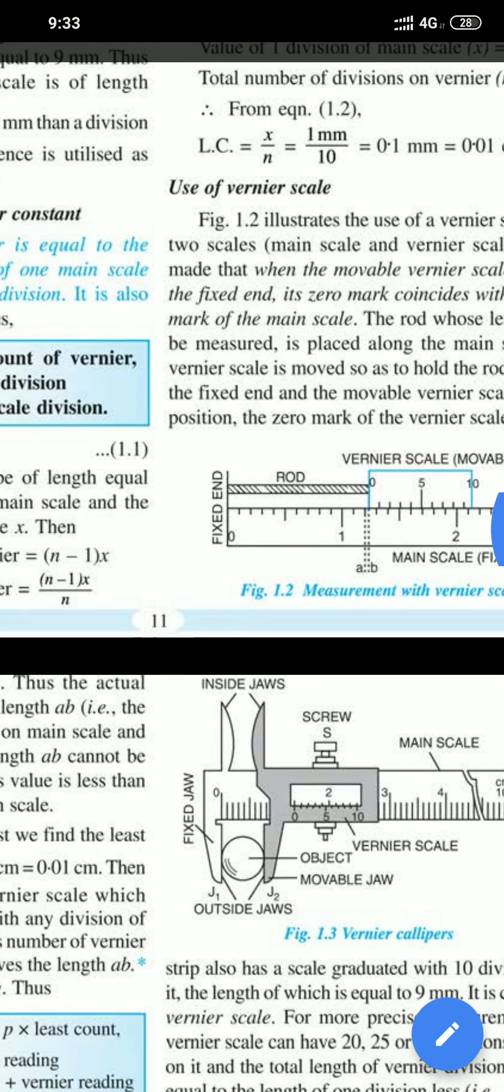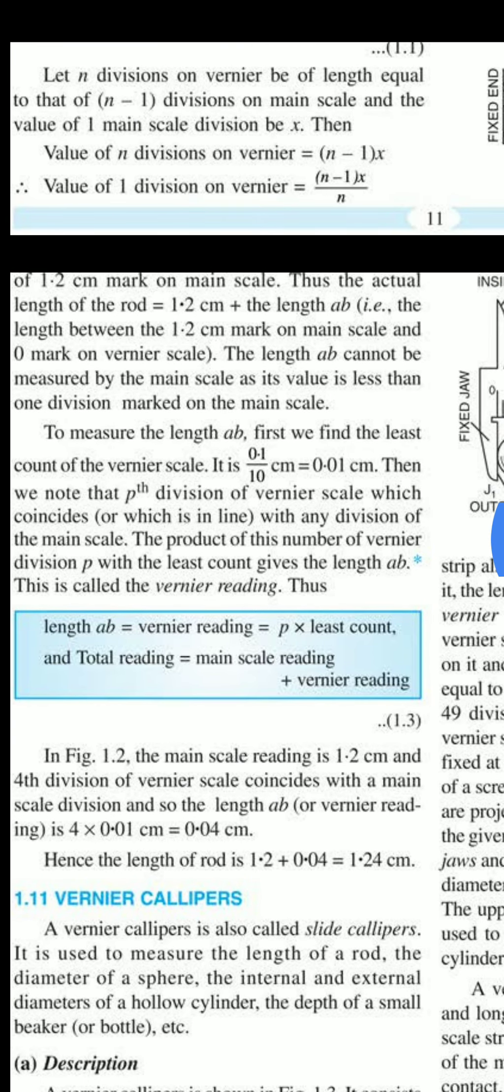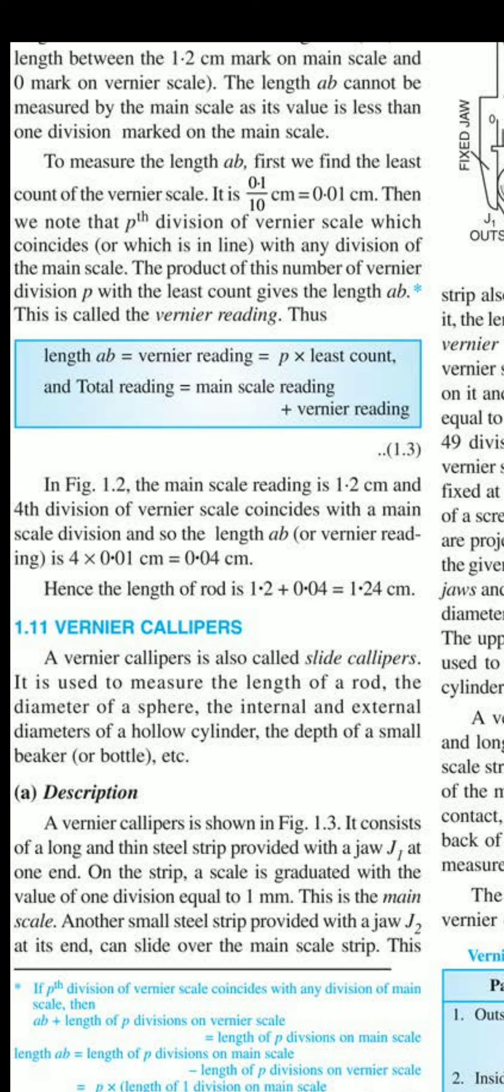See here, just below the figure, below equation 1.3. In Figure 1.2, the main scale reading is 1.2 centimeter, and the fourth division of vernier scale coincides with the main scale division. So the length AB is 4 multiplied by 0.01 centimeter. What is 0.01 centimeter? It is the least count.